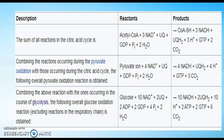The sum of reactions in the citric acid cycle is: acetyl-CoA + 3 NAD⁺ + UQ + GDP + Pi + 2 H₂O → CoA-SH + 3 NADH + UQH2 + 3 H⁺ + GTP + 2 CO₂. Combining pyruvate oxidation with the citric acid cycle, the overall pyruvate oxidation is: pyruvate⁻ + 4 NAD⁺ + UQ + GDP → 4 NADH + UQH2 + 4 H⁺ + GTP + 3 CO₂.